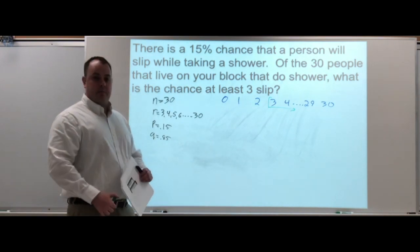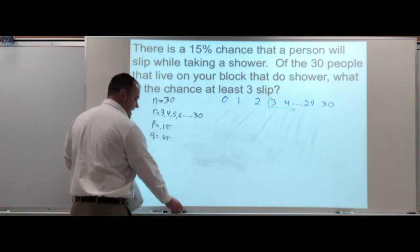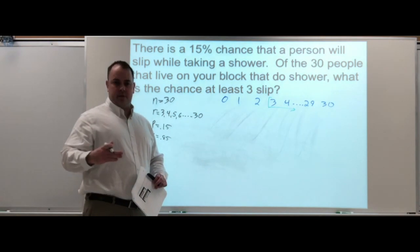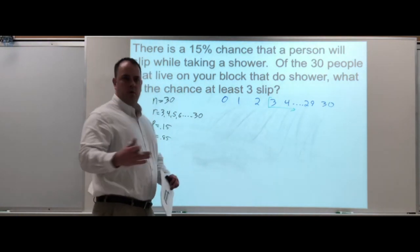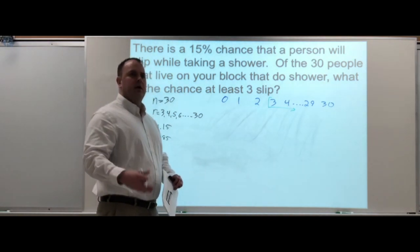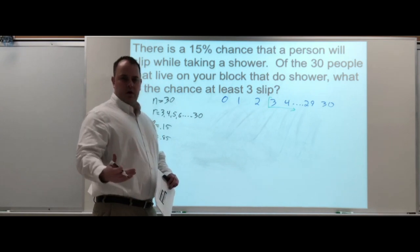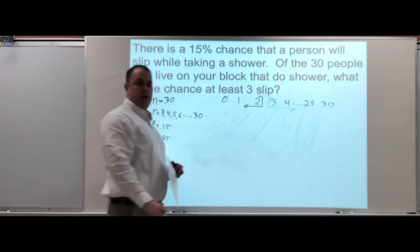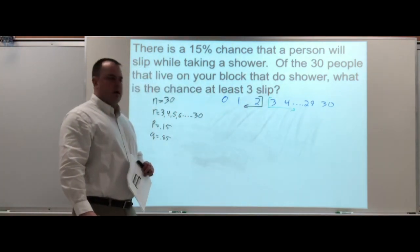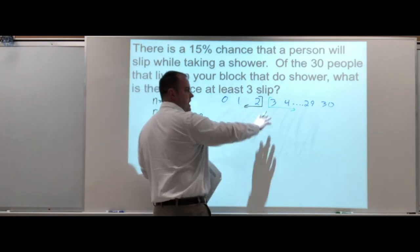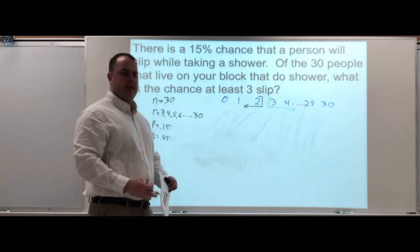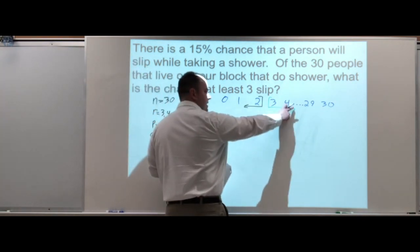Another thing to do is use the complement. Instead of saying at least three, let's find less than three. Less than three would be zero, one, and two. Adding up all these probabilities together will give you 100 percent, that's all the ways it could happen.